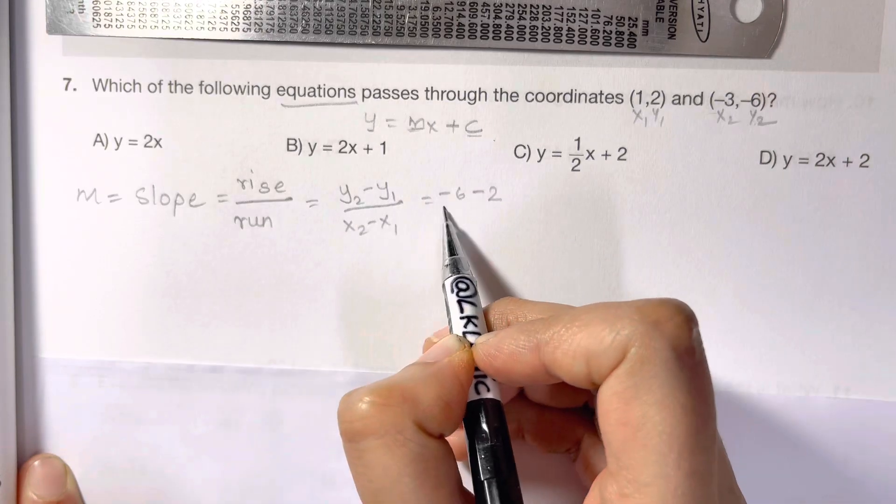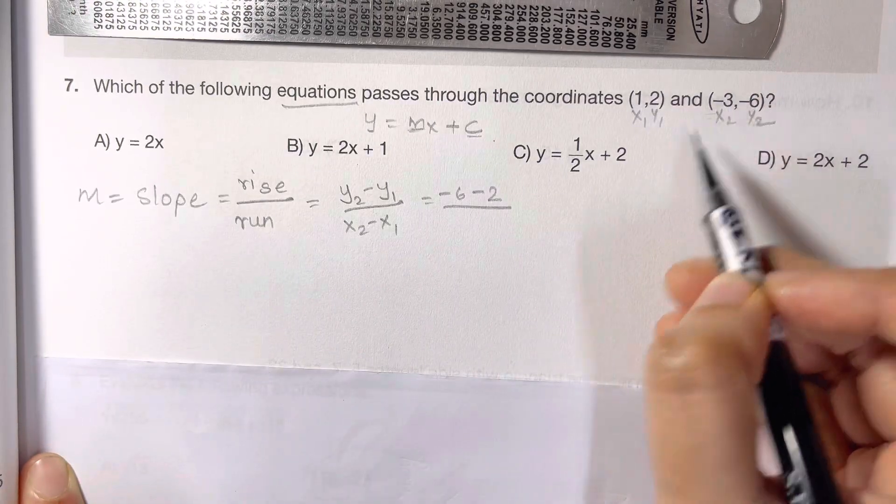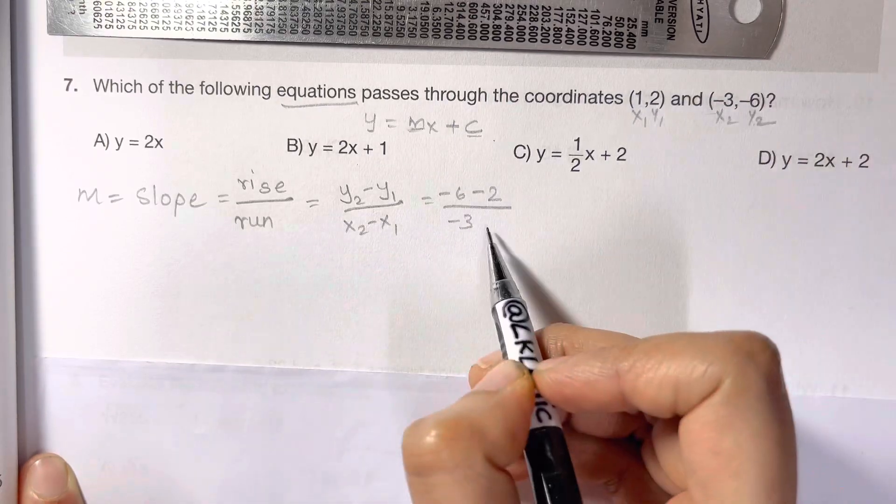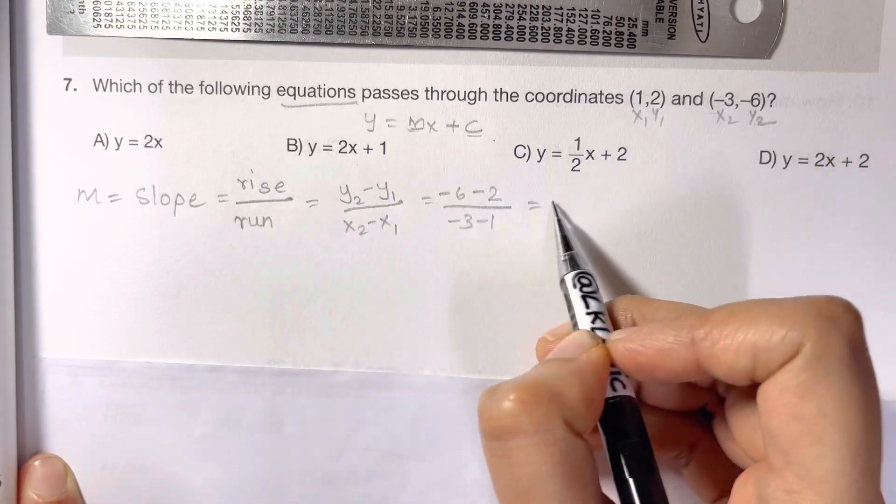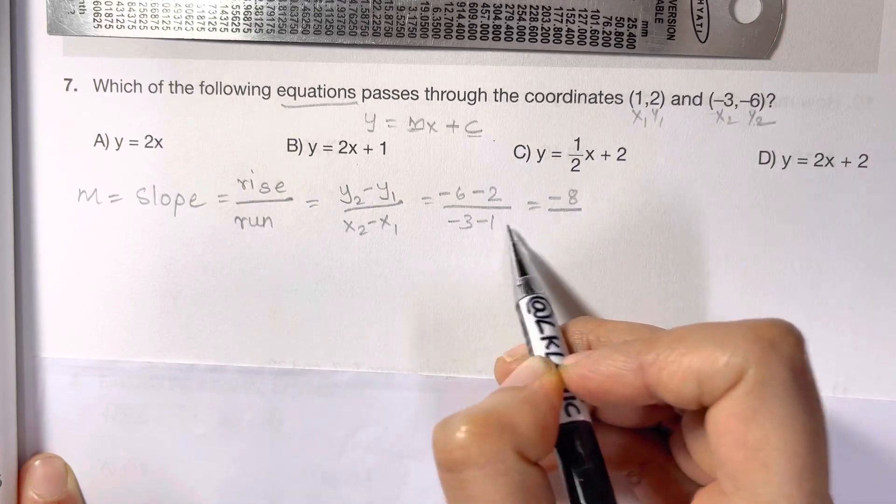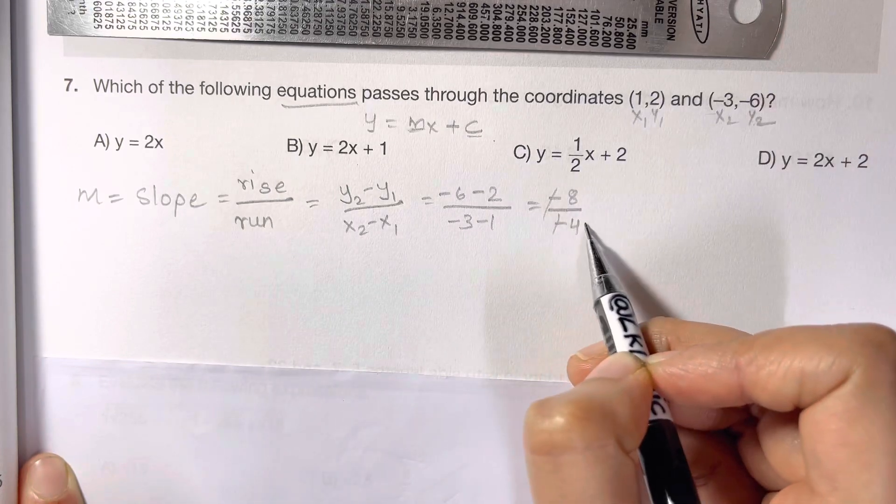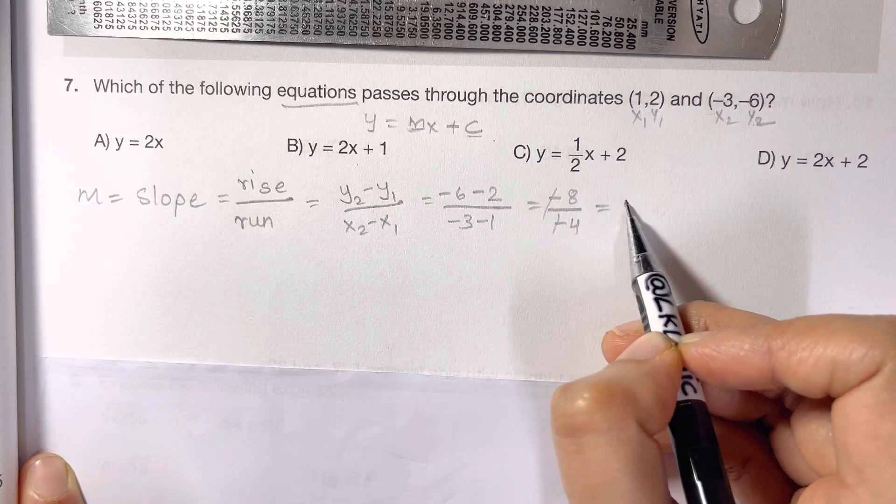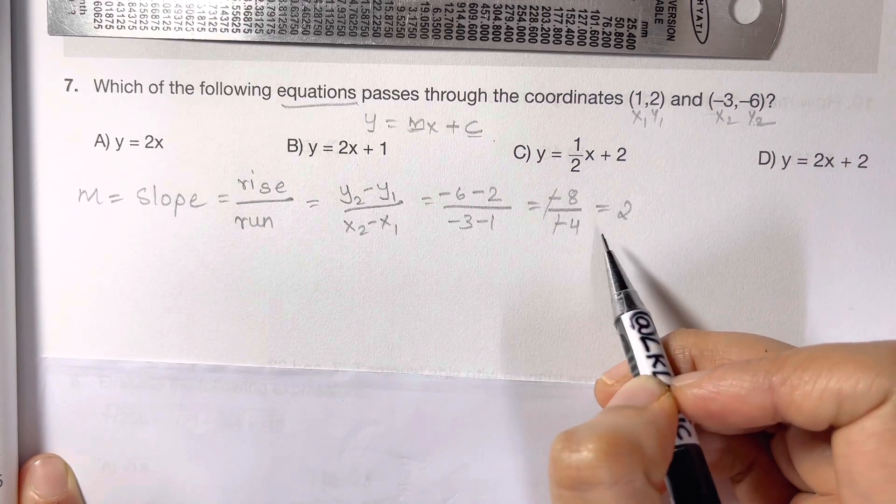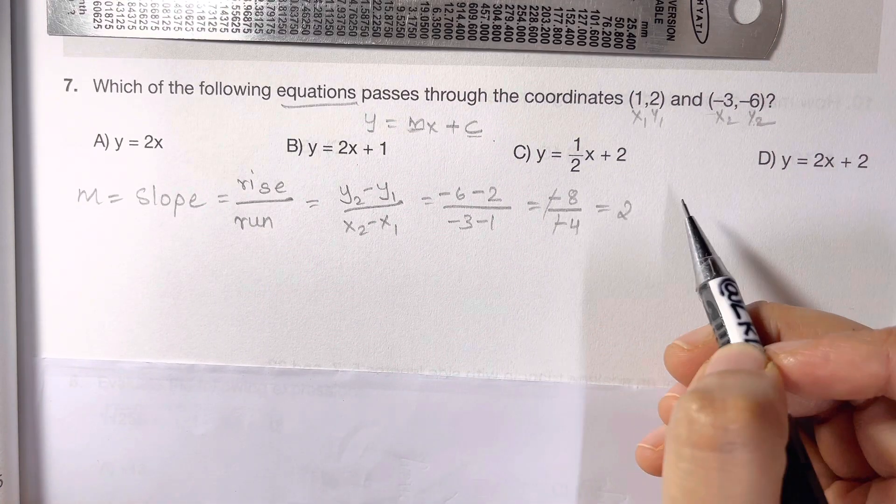So negative 2 over x2 is negative 3 minus 1, which is equal to negative 8 over negative 4. Cancel out, 8 divided by 4 is equal to 2. So you have got the slope as 2.